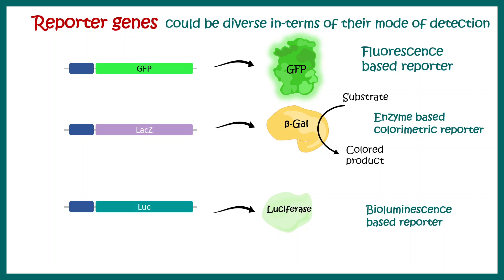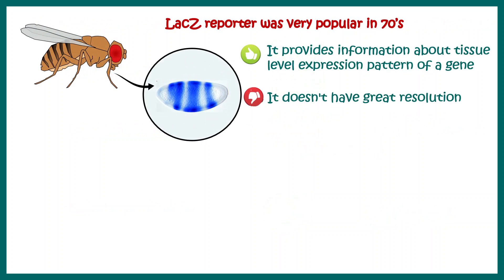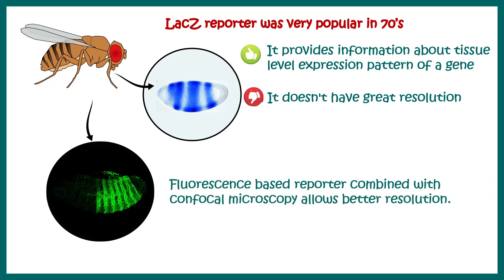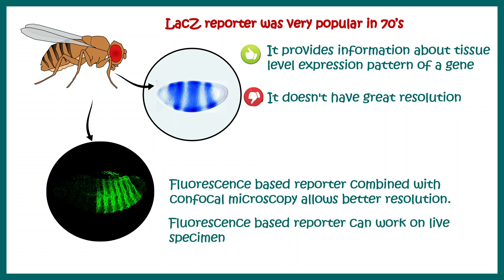For simplicity, let's talk about GFP-based reporters and how we can use them for biomedical research. In the early days, the lacZ reporter was very popular — it provides information about tissue-level expression. For example, in a fly embryo a particular gene can be seen expressed in a patterned fashion, but it doesn't have great resolution at the cellular level. That is why fluorescence reporters are really interesting: they not only provide cellular and molecular level resolution, but they can also be used on live specimens, allowing you to track gene expression dynamics over a long time.